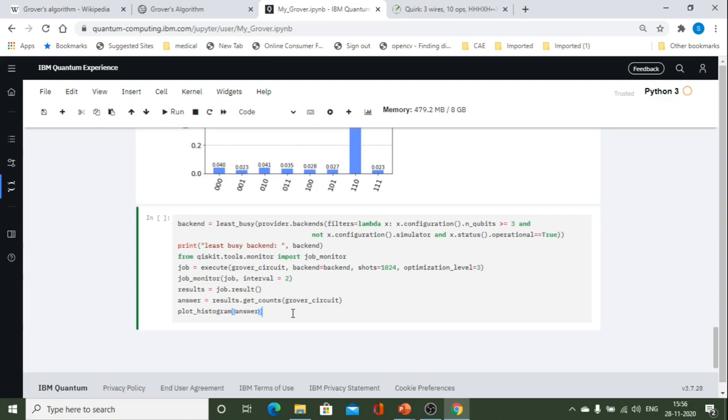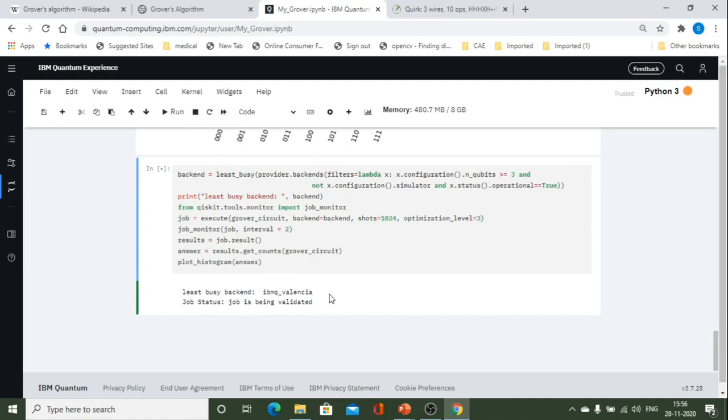First, we have to see which is the least busy. And then, we have to load to that simulator. Job is being validated. Oh, luckily, the queue size is very less. Otherwise, if you do this exercise in the US daytime, you have to wait for a long time. Hopefully, yeah, it's running. I hope within a minute, we'll be able to get the answer. Have little patience. Actually, we are lucky. Yeah.